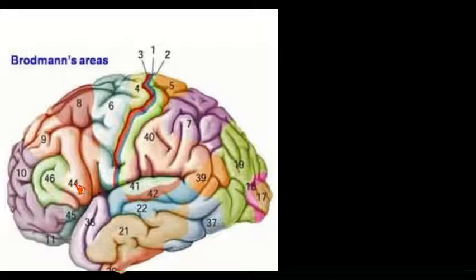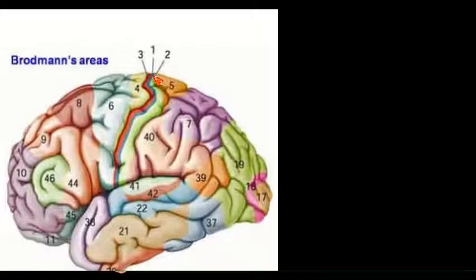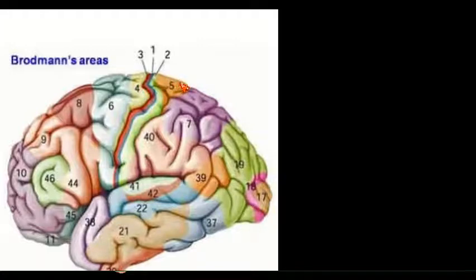Moving to the parietal lobe: behind the central sulcus you can identify the post-central gyrus, which contains sensory areas. Area 3, 1, and 2 make up the primary sensory area. If any lesion is present here, it leads to loss of appreciation of exteroceptive and proprioceptive sensations from the opposite half of the body. Crude pain, temperature, and touch sensations often return, believed to be due to the functions of the thalamus.